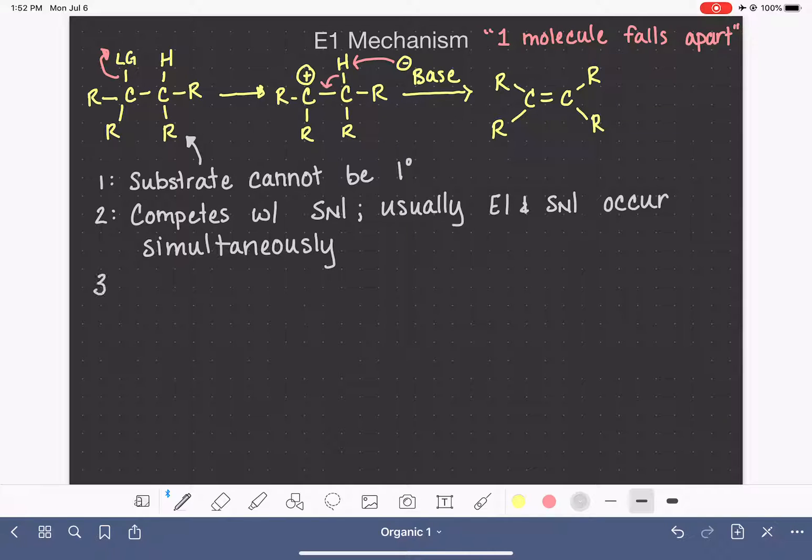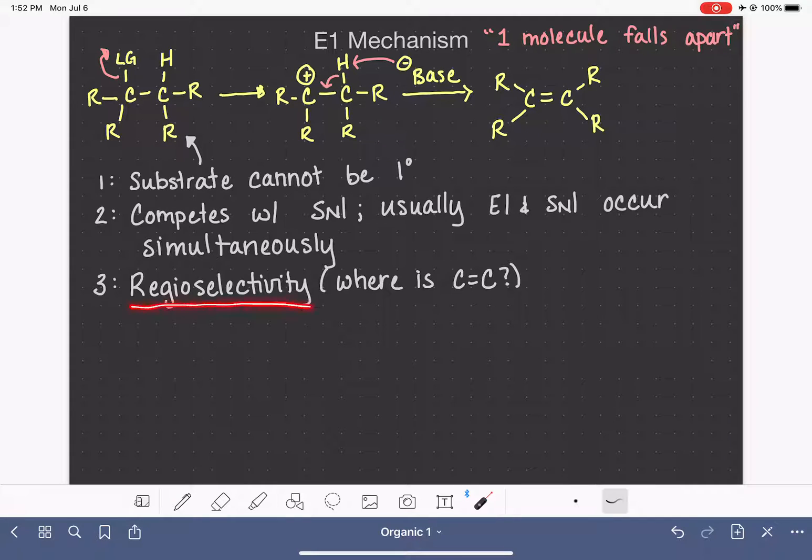For the next thing, so in the E2 mechanism, we talked quite a bit about regioselectivity. Regioselectivity is just a fancy way of asking where is the carbon-carbon double bond going to be located in the product? And with the E2 reaction, we could control regioselectivity by changing the structure of the base. If we used one type of base, we'd get one type of product primarily. And if we used a different base, we'd get a different product.